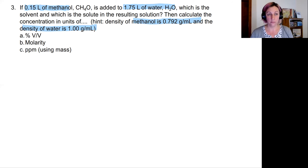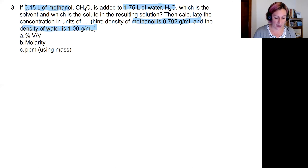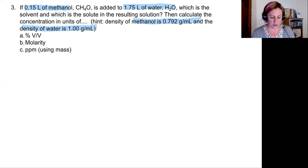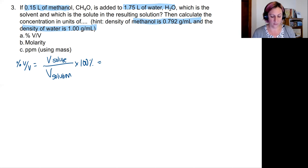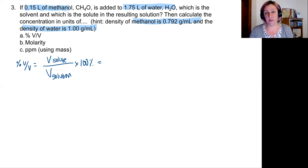Let's start with part A: volume by volume percent. The calculation looks like this — percent volume by volume equals the volume of the solute divided by the volume of the solution, times 100 percent. My information was given in terms of volume, so this becomes a little bit easier.